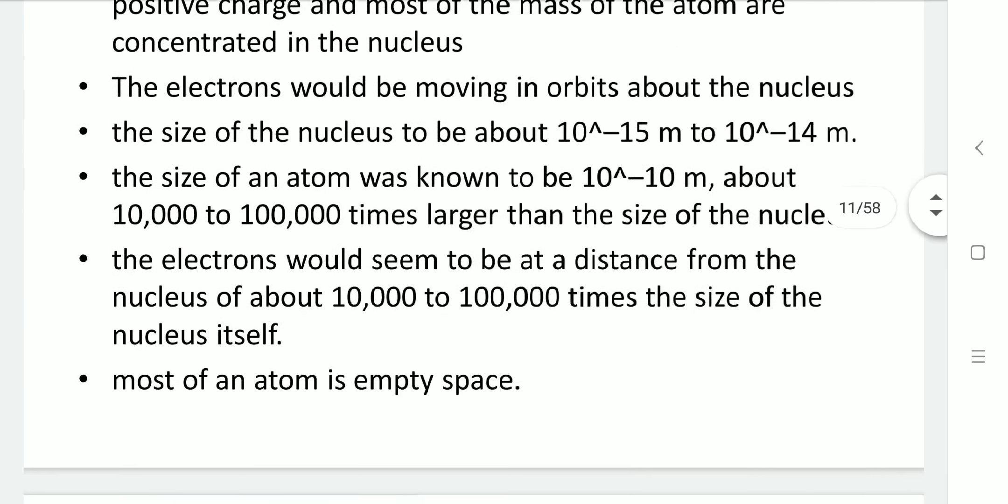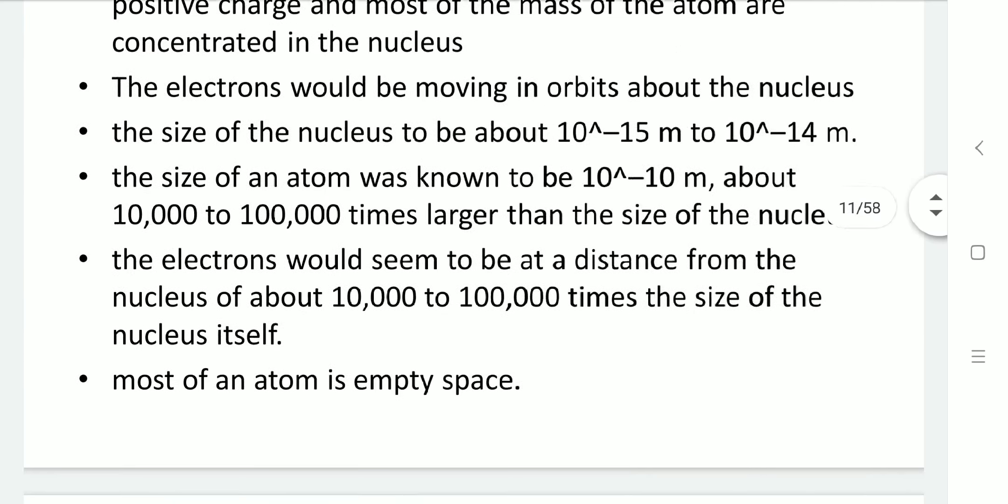Ze means e is the charge of a single particle, and if multiplied with Z, it gives you the total charge. Ze gives the number of charge particles present in the atomic structure, which gives the atomic number, and for gold, Ze equals 79. The nucleus of gold is about 50 times heavier than alpha particles, which remains stationary throughout the scattering process.